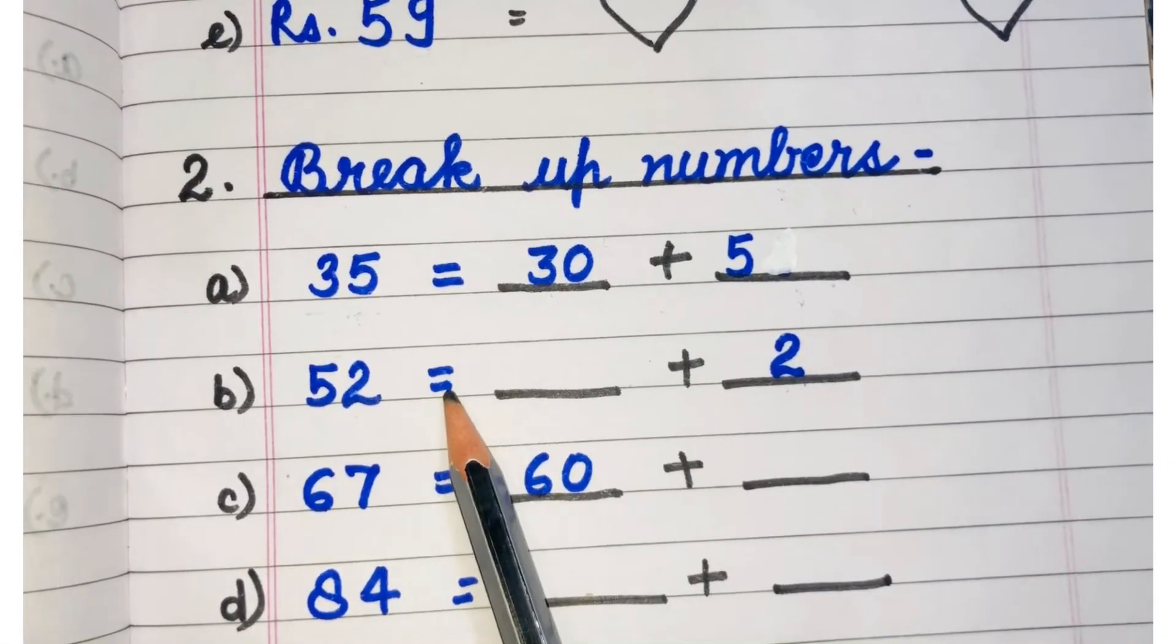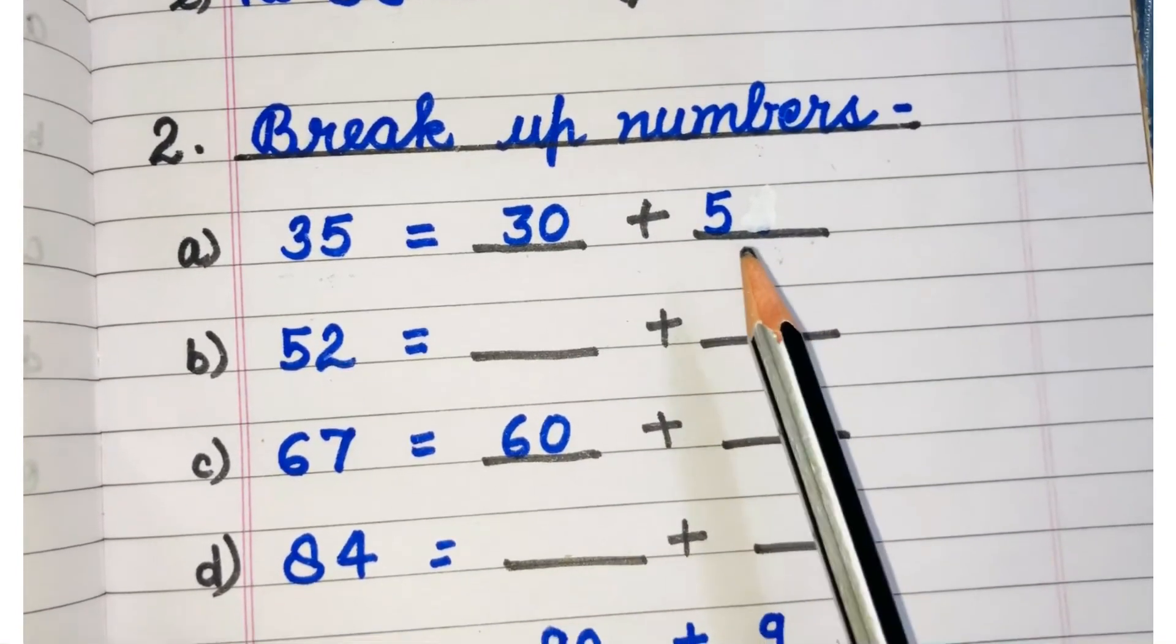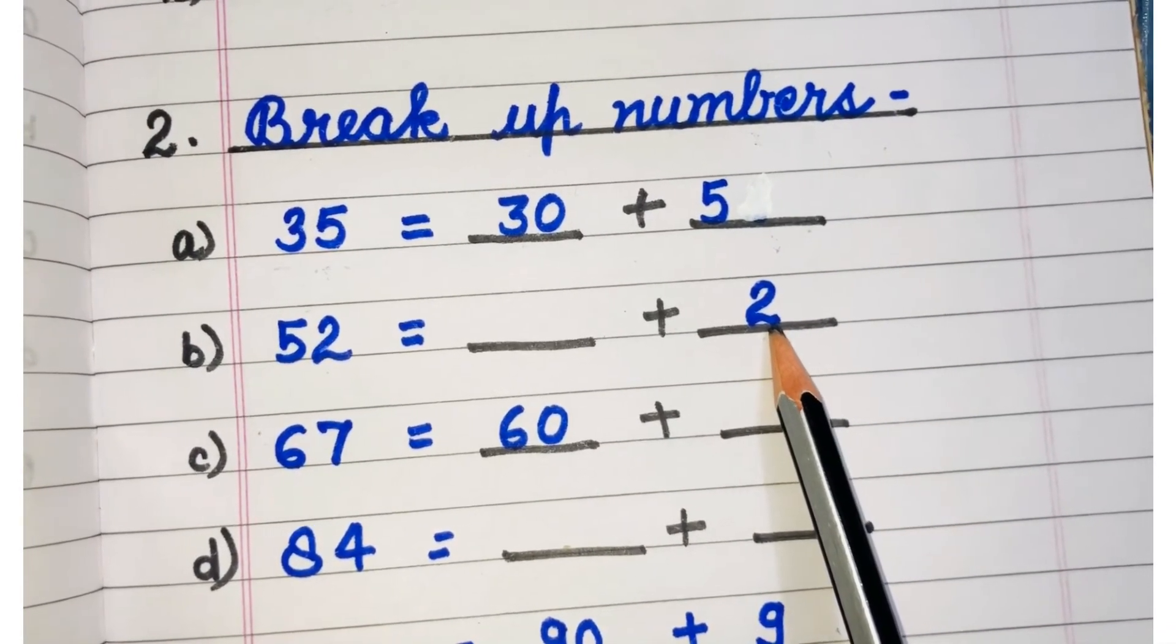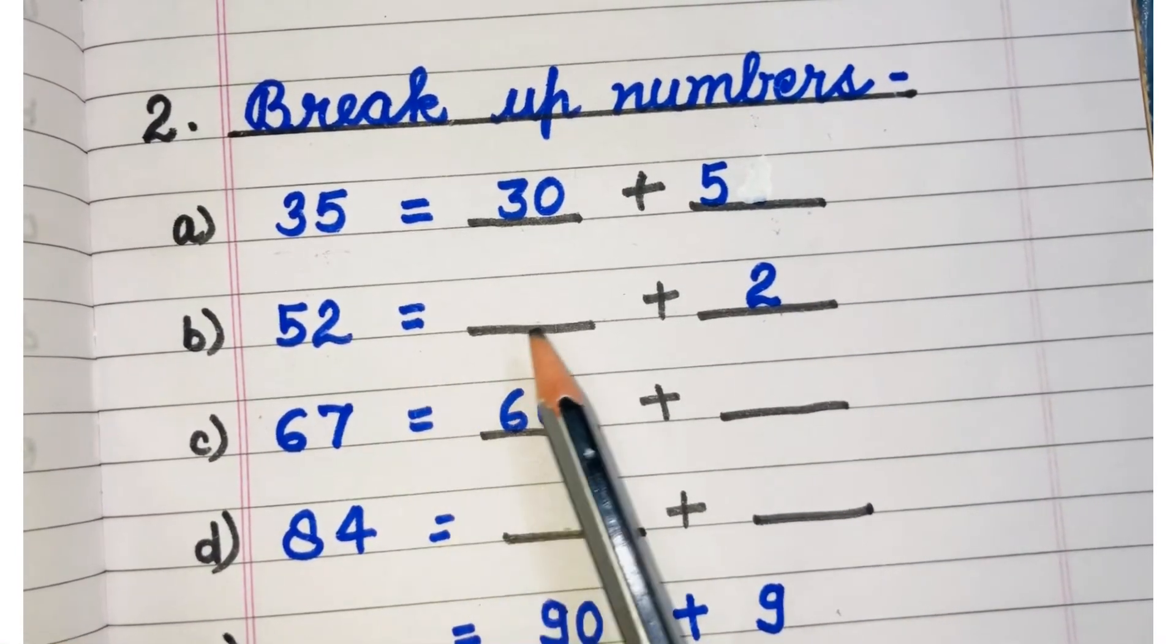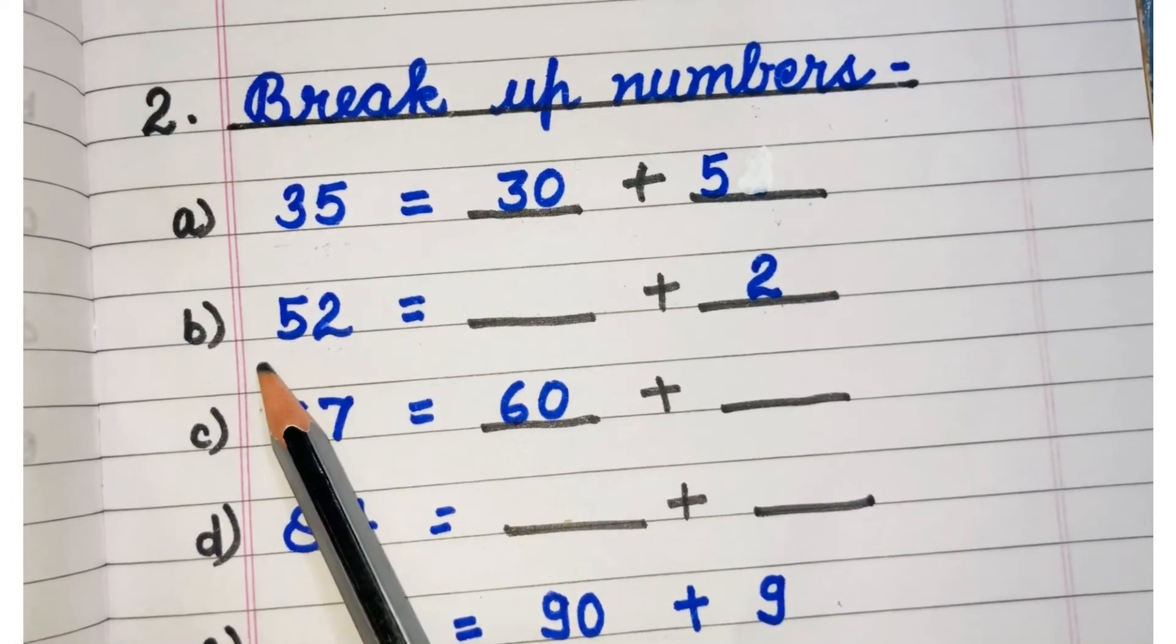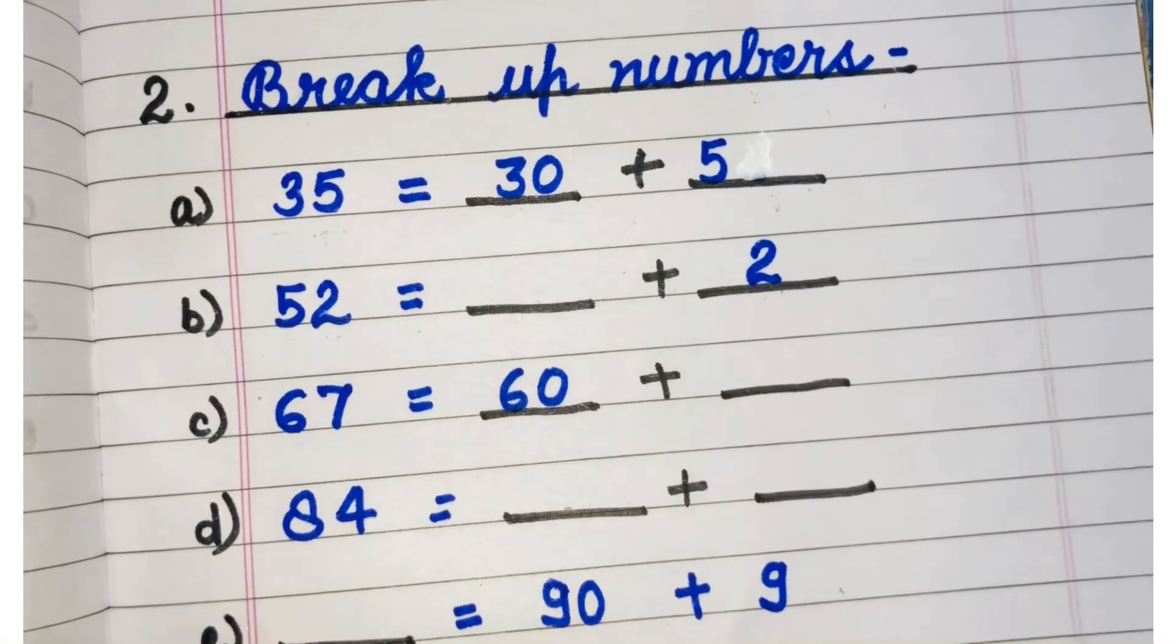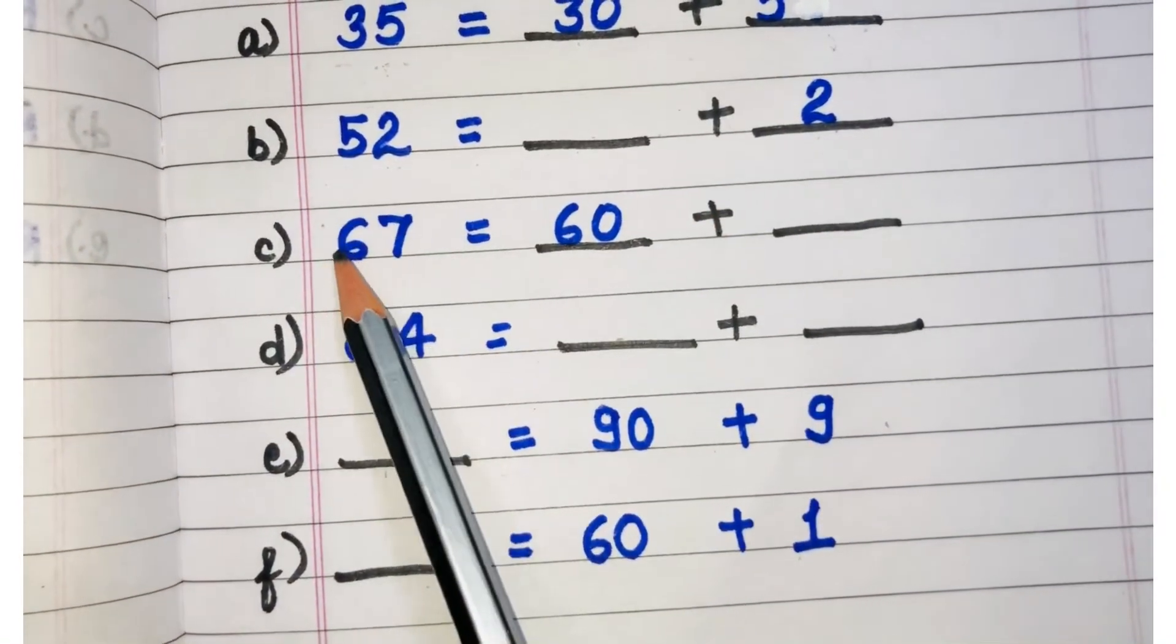Students, let's solve these examples. We have number 52. 52 is equal to dash plus 2. Tell me students, 52 is equal to how many tens and how many ones? We already have ones. They are 2. Now how many tens we required? 52 is equal to 5 tens and 2 ones. 5 tens is equal to 50. So the breakup of 52 is 50 plus 2.